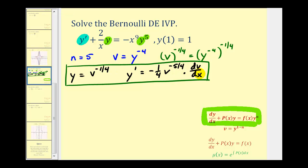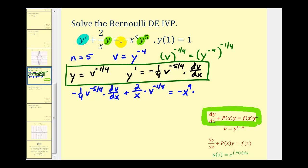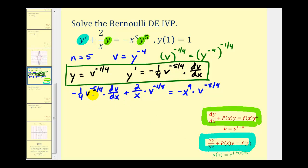So y prime is going to be all of this, plus 2 divided by x times y, which is v to the negative 1/4, equals negative x to the 9th times y to the 5th. If we raise v to the negative 1/4 to the 5th, we would have v to the power of negative 5/4. This differential equation is now a linear first-order differential equation. We need to manipulate it so the first term is dv/dx, and we'll do this in two steps.